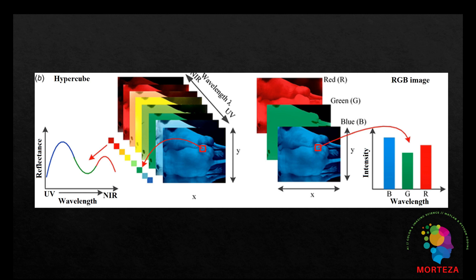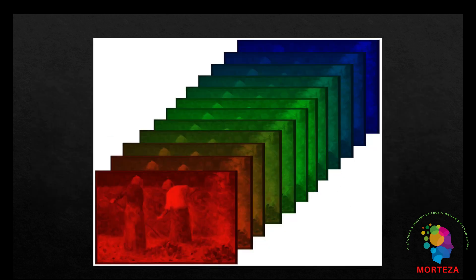ENVI is the industry standard for image processing and analysis. It is used by professionals across industries to extract timely, reliable, and accurate information from imagery and data, because it is scientifically proven and also easy to use. The ENVI image format is a flat binary raster file with an accompanying header file. The ENVI header file contains metadata for ENVI format images. The header file uses the same name as the image file with the file extension HDR. I will show you guys how to read this type of hyperspectral images into MATLAB and visualize them using different approaches.